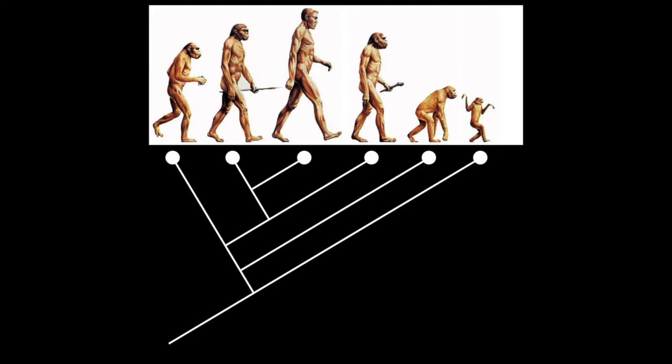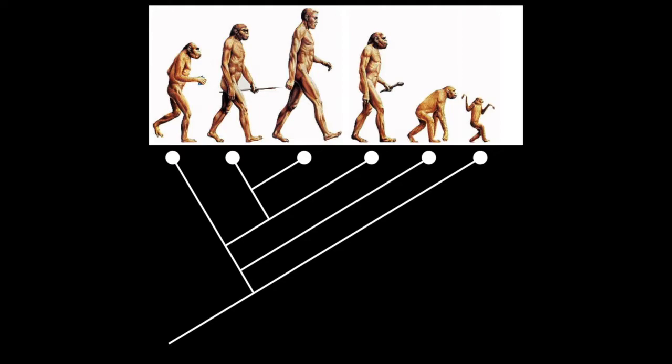Now primed in cladistics, without having to pay exorbitant tuition fees, we can now begin. The first split between the dinosaurs occurred in the arrangement of the hip. All hips are composed of the ilium, ischium and pubis. It is the position of this pubic bone that creates a split.